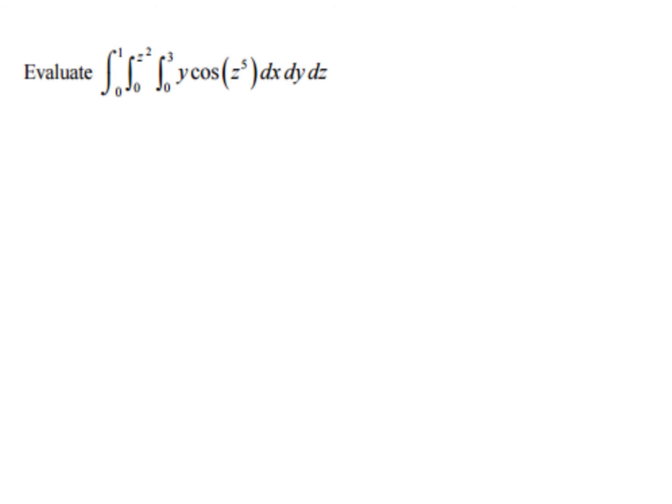All right. Let's do one that's a little bit different. I'm going to add one that has an actual variable. All right. So you're going to notice here our first one is dx. And I don't have an x in here. So the whole thing just serves as a constant. So I'm going to have xy cosine of z to the 5th. And we're going to evaluate that at 3 and 0 for x. So that's just going to be 3y cosine of z to the 5th.